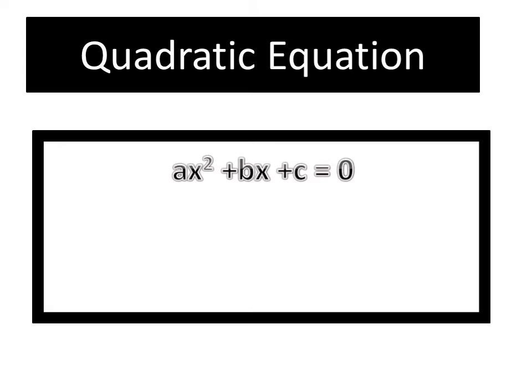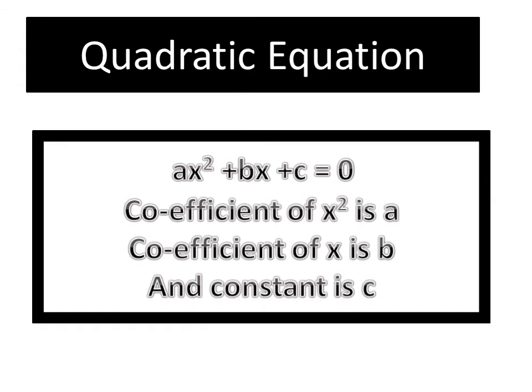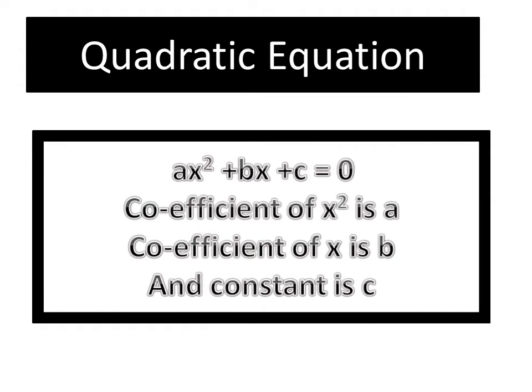In this equation, a, b, and c are considered as real numbers. We can also say that a is the coefficient of x², b is the coefficient of x, and c is a constant number.